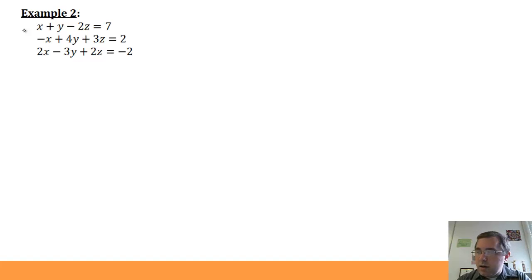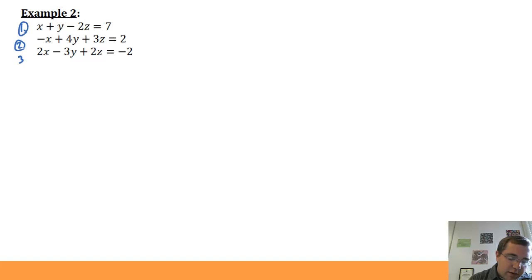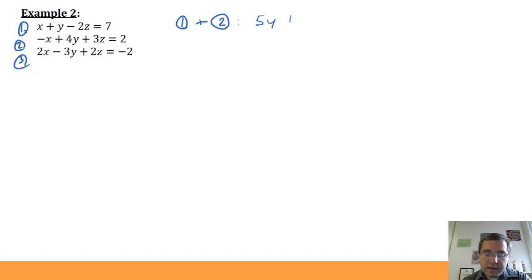The system is: x plus y minus 2z equals 7; negative x plus 4y plus 3z equals 2; 2x minus 3y plus 2z equals negative 2. We want to take two different pairs of equations and eliminate the same variable in both. I number the equations 1, 2, and 3. Equation 1 plus equation 2 immediately eliminates x, giving 5y plus z equals 9.